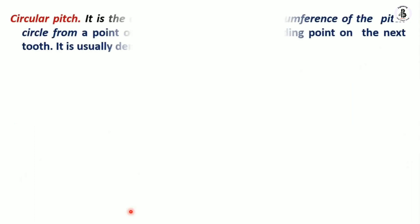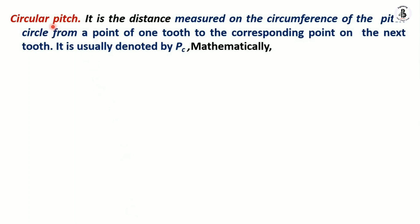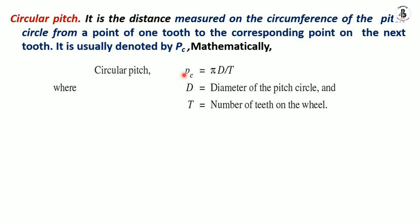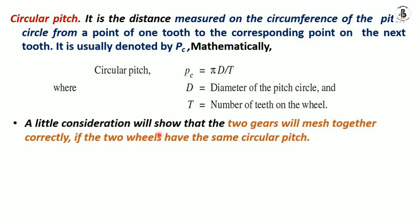Circular pitch is also an important part in measurement. It is the distance measured on the circumference of the pitch circle from a point on one tooth to the corresponding point on the next tooth. It is denoted by Pc, and mathematically: Pc = πD / T, where capital D is the pitch circle diameter and T is the number of teeth on the gear. Two gears will mesh together correctly if both wheels have the same circular pitch.